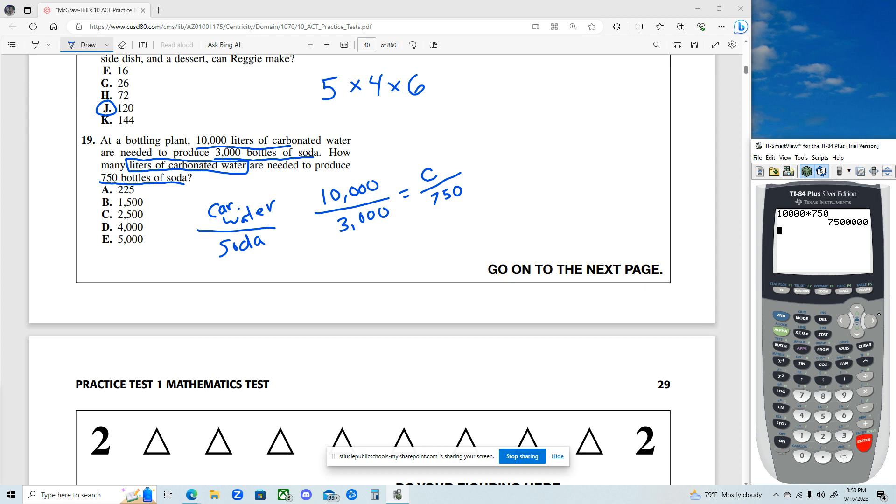So that would be 7,500,000 equals to, we cross multiply, 3,000 C. And now divide both sides by 3,000.